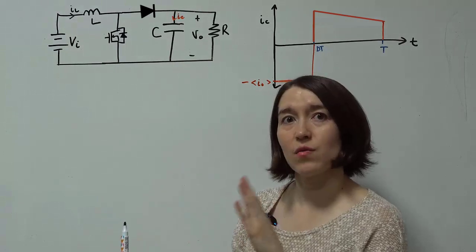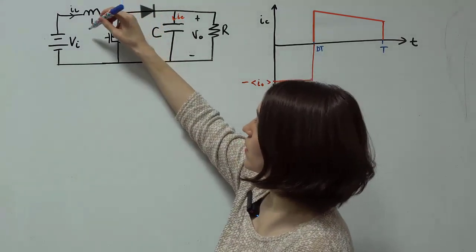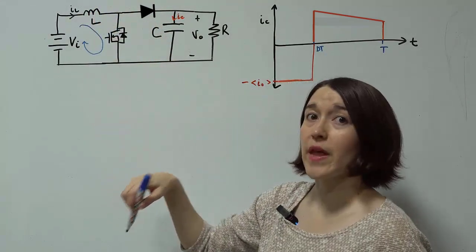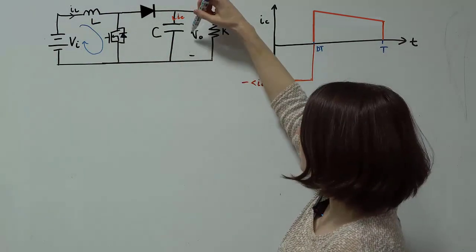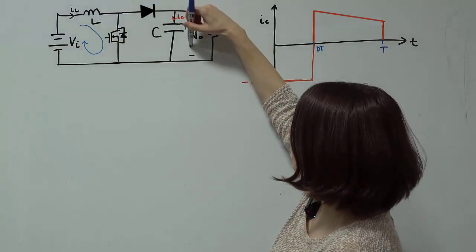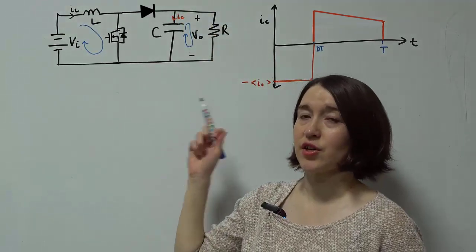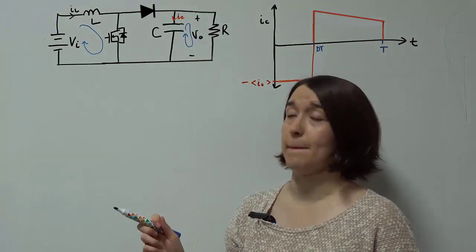So let's look at when the switch is on where the current is flowing. When the switch is on, the current flows through here in this loop. And because we need to provide power to the load, we're also going to have current flowing in this direction.